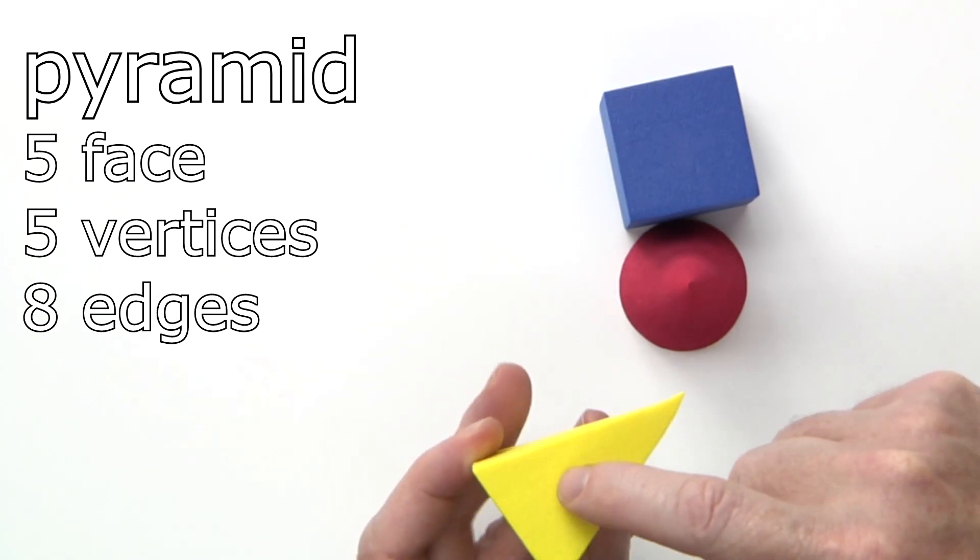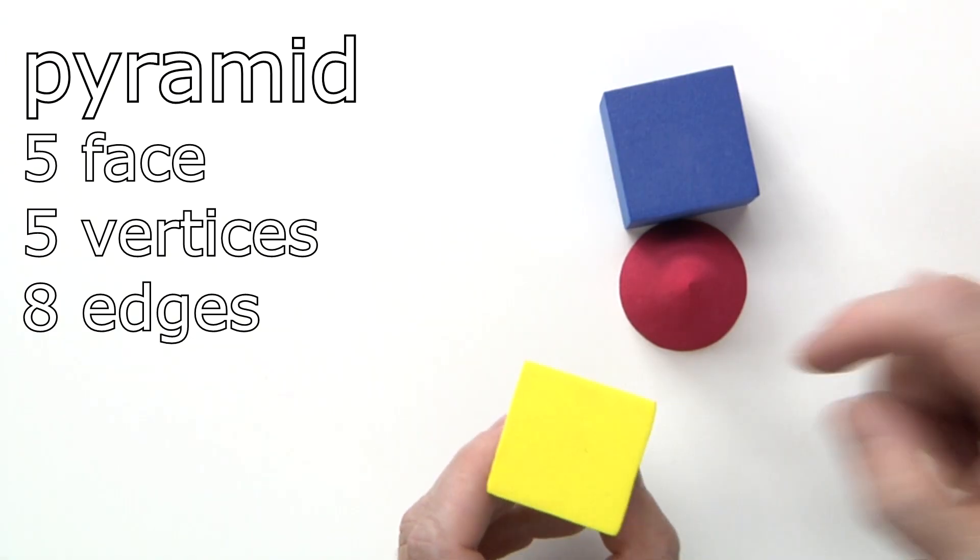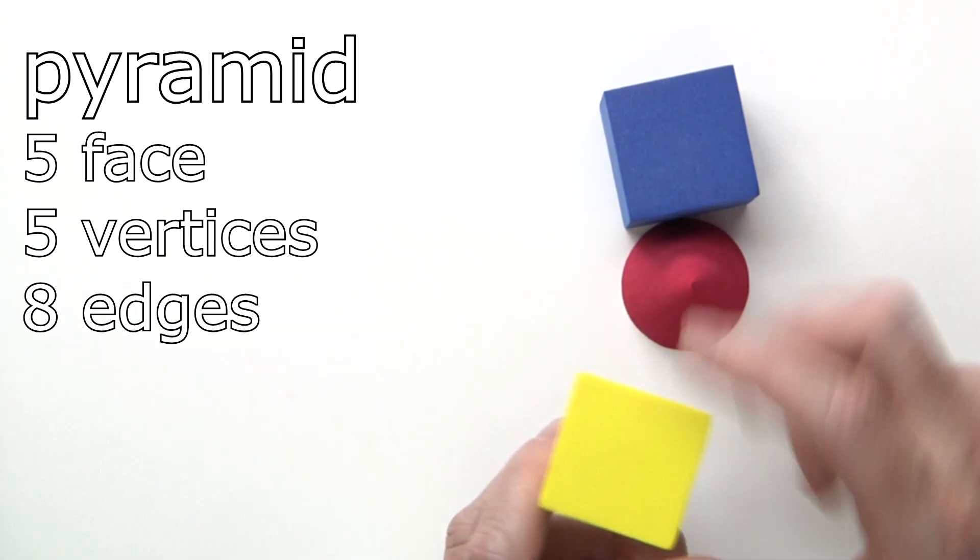Let's count them. 1, 2, 3, 4, 5. Five flat faces on a pyramid.